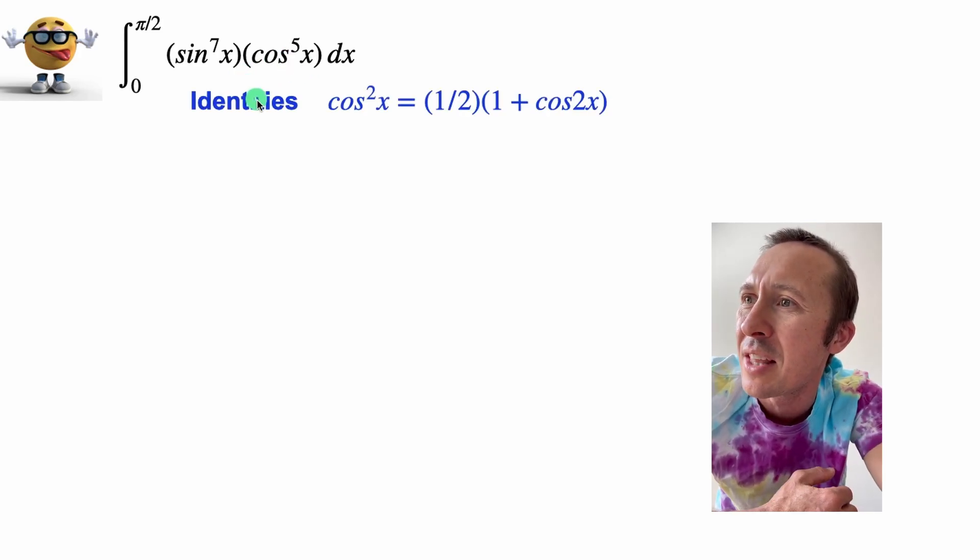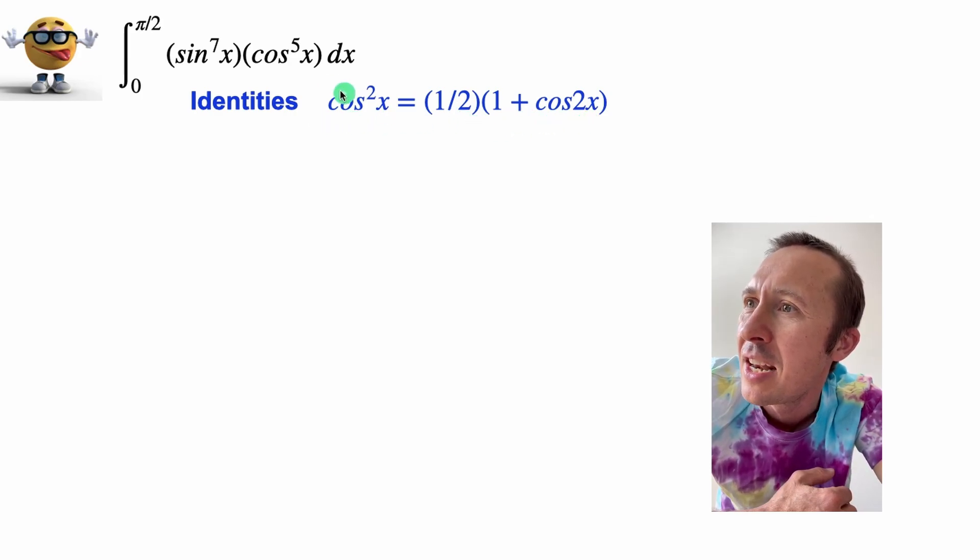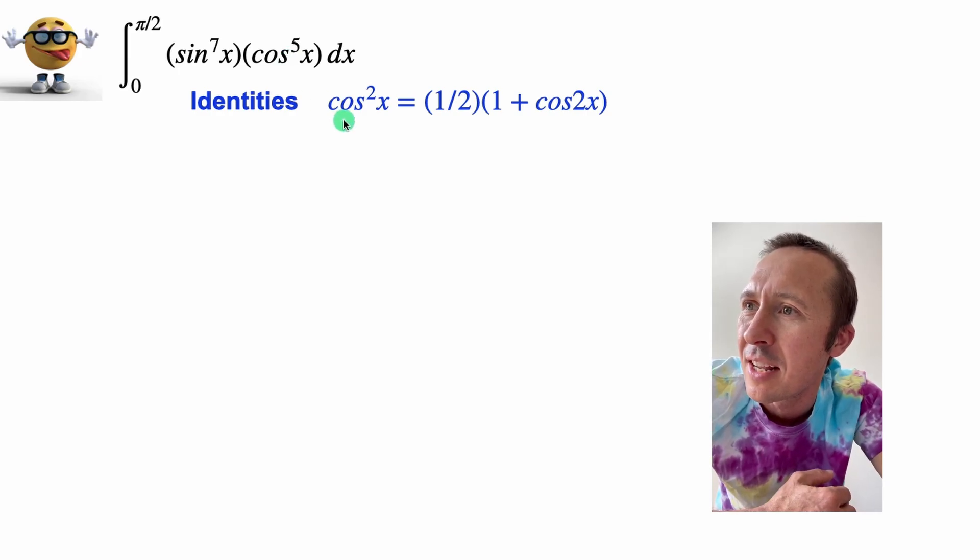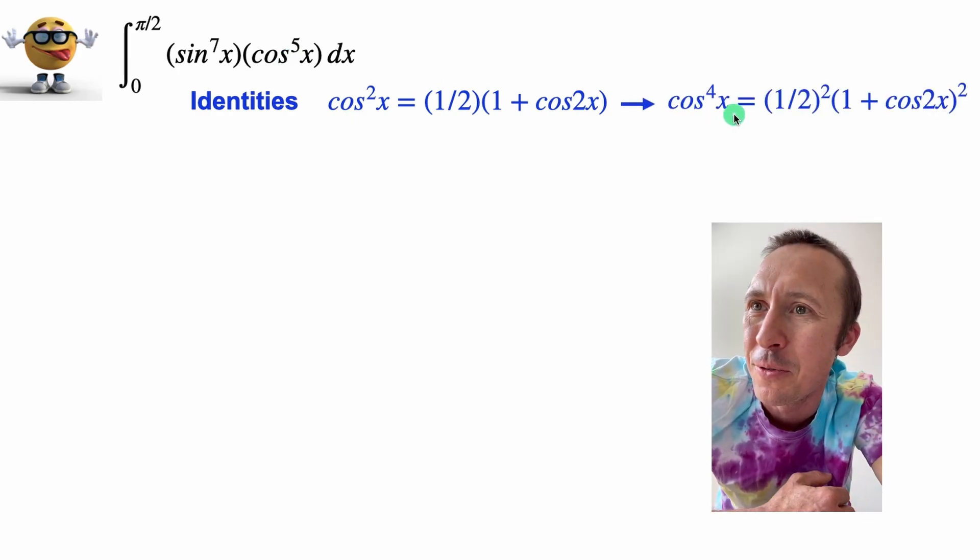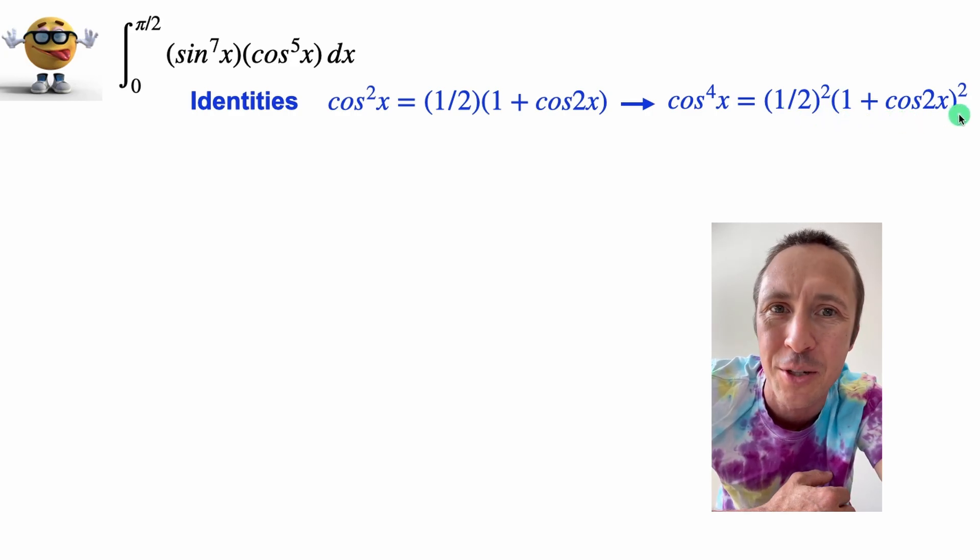what I did was use the half angle identity. So this is one of them: cos²x equals one half times one plus cos 2x. Now we have cos to the power of five, so I squared this identity to get cos⁴x equals one half squared times one plus cos 2x squared.